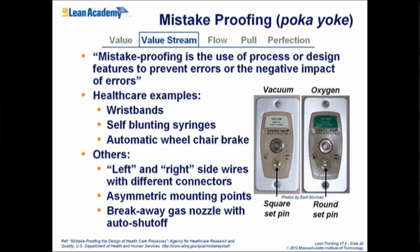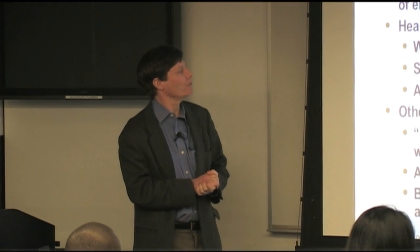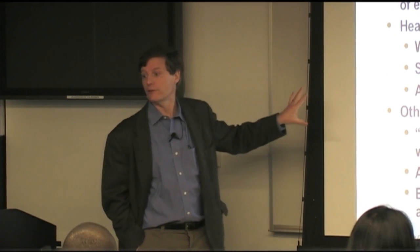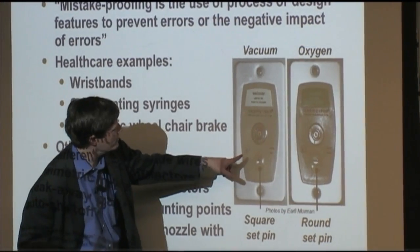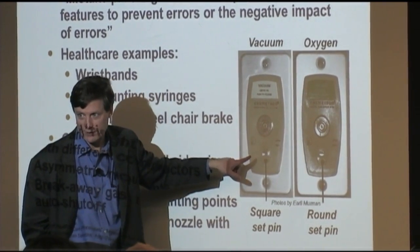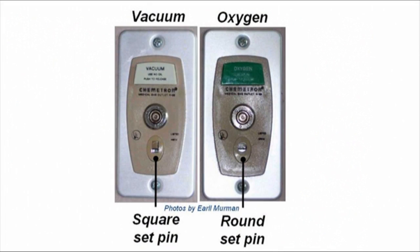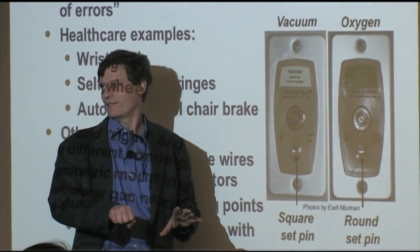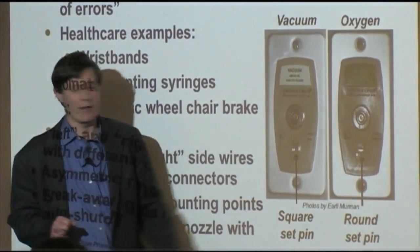Mistake proofing. Mistakes in a process are waste, and relying on people to fix mistakes is dicey. People are not so good at getting things right on a really consistent basis over many many repeats. So why not make the process itself mistake-proof? This is a great example from a hospital: vacuum and oxygen connectors. Some things you want to hook up to vacuum; some things you want to hook up to oxygen. Obviously, hooking the breather up to vacuum or the waste disposal thing up to pure oxygen would be bad. There's a little stud so that when you hook the thing up, it won't go into the wrong one — very simple, very effective.